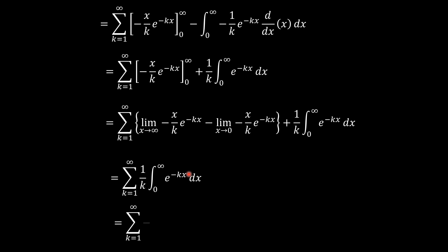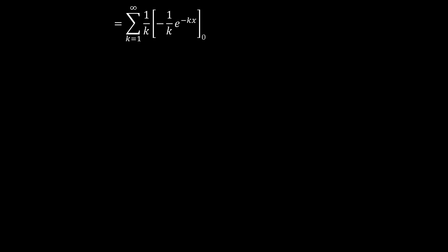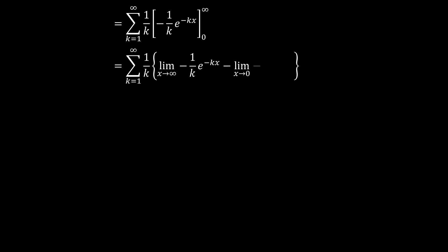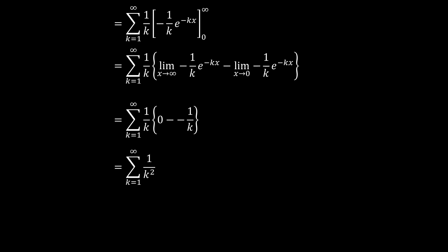Integrating e to the power negative kx gives negative 1 over k times e to the power negative kx, evaluated with limits 0 and infinity. As x tends to infinity, e to the power negative kx tends to 0. As x tends to 0, e to the power negative kx tends to 1. So we get 1 over k times (0 minus (negative 1 over k)), which simplifies to 1 over k squared. Summing over k gives the sum from k equals 1 to infinity of 1 over k squared.